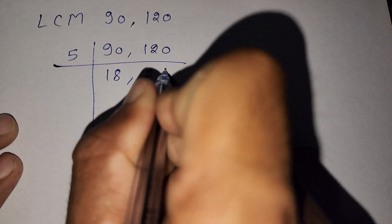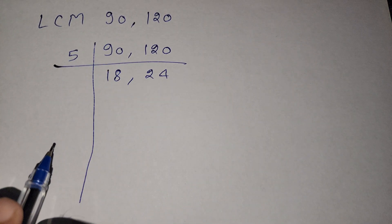We divide by 5, so here is 18 and here is 24. Now we divide by 3 for both values.